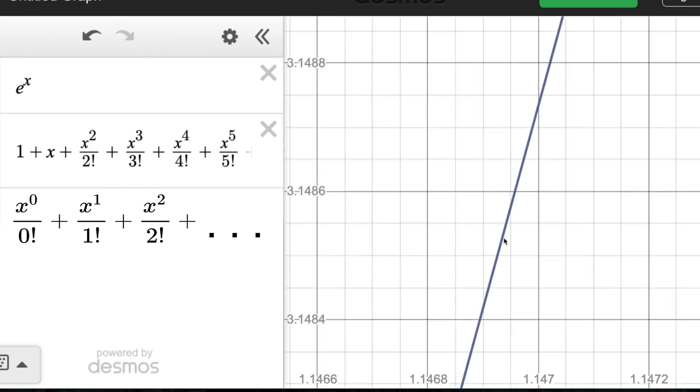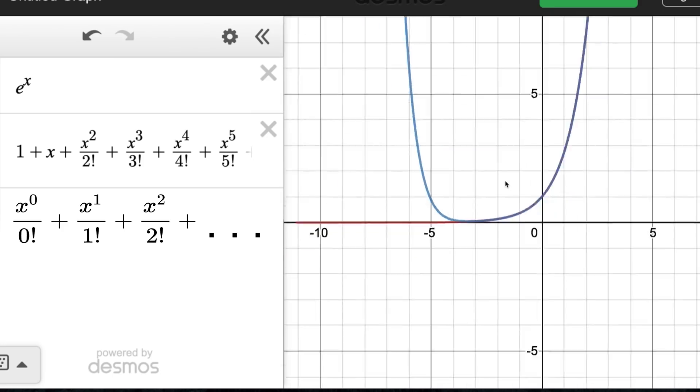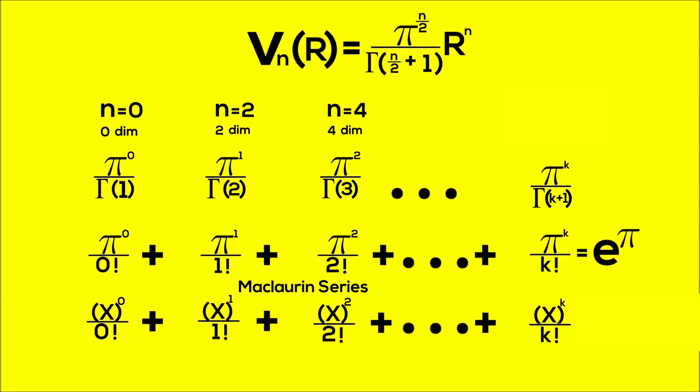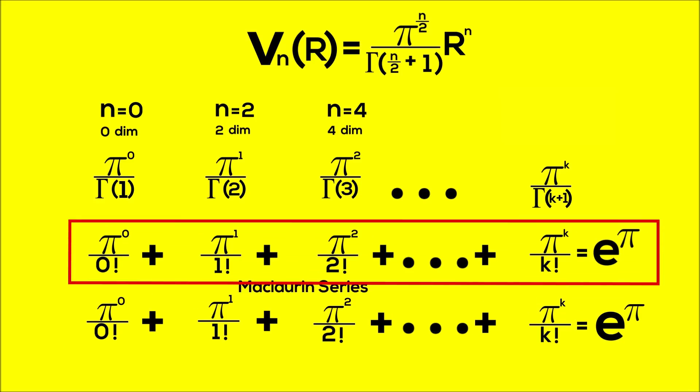But as we go on forever, the series will approach a perfect approximation for e to the x. This means that infinite series we saw earlier can also be written as e to the x. And if we plug in pi for every x within the polynomial to infinity, we get the same output as we would plug in pi into e to the x. And this matches the original calculation we wanted to determine.